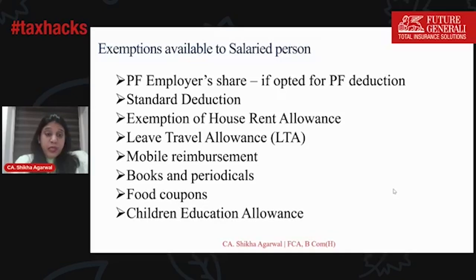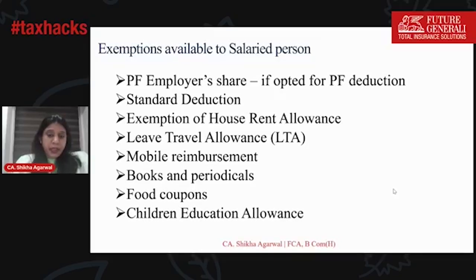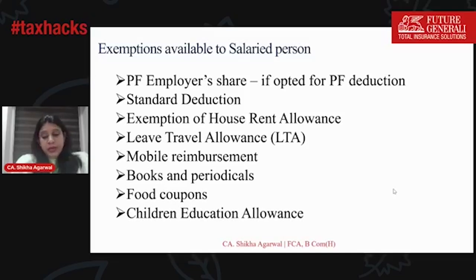Mobile reimbursements — there are certain amounts of mobile reimbursement you can ask your employer to include in your CTC. Books and periodicals reimbursements, food coupon reimbursements, and children education allowances are also government-given exemptions available to salaried persons. You must ask your employer to get these involved in your CTC.